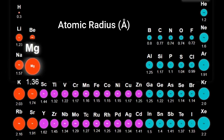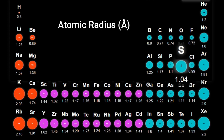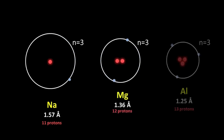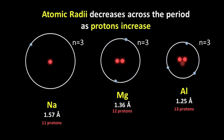As we move from the left to the right in the periodic table, the radius keeps on decreasing. This is because as we move from left to right, we keep adding more and more protons. But the outer electrons still lie in the same shell. Across a period, the shell number doesn't change. So now you have more protons — more nuclear charge — pulling on the same shell of electrons. Therefore, the size decreases as we move from left to right across the period.